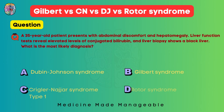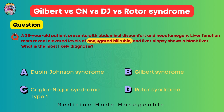A 35-year-old patient presents with abdominal discomfort and hepatomegaly. Liver function tests reveal elevated conjugated bilirubin and liver biopsy shows a black liver. Conjugated bilirubin is increased and a black liver is present — both definitively point toward the diagnosis of Dubin-Johnson syndrome.